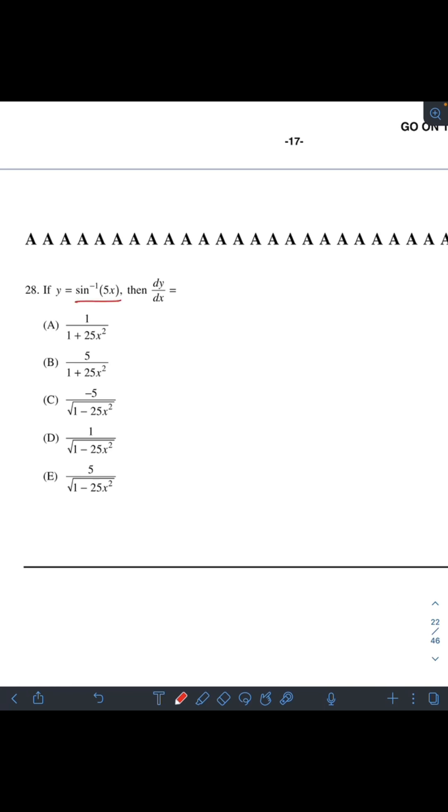The first thing we can notice is that this is inverse sine, so we have a specific formula to use. The derivative of inverse sine is 1 over square root of 1 minus x squared. Since we have 5x inside the sine, we need to use the chain rule.